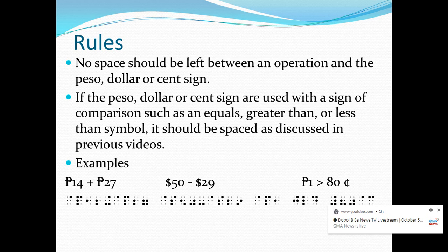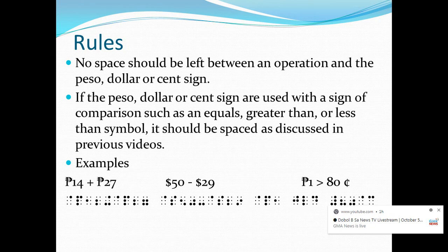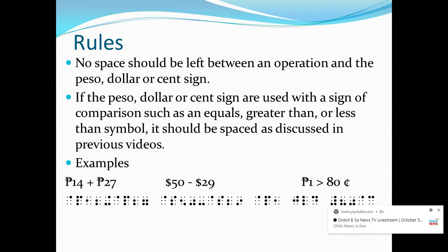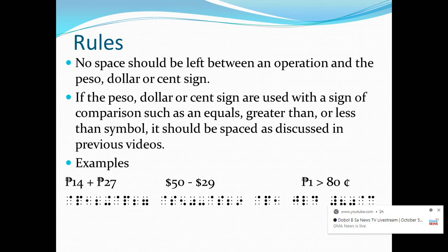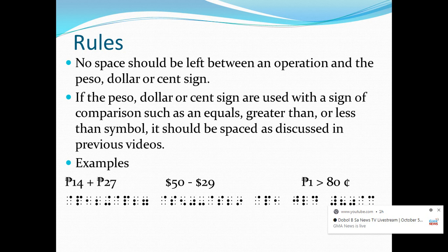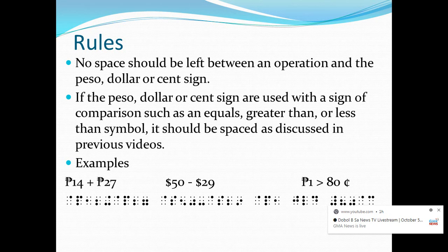Let's take some examples. First, we have ₱14 plus ₱27. So in Nemeth Braille code, we write dot 4 and letter P, then numbers 1 and 4 for 14. Then we write the plus sign without a space, and then we write the peso sign again — dot 4 and letter P — and numbers 2 and 7 for 27, without a space. Since the peso is interacting with a sign of operation — the plus sign — there should be no space between the plus and the peso sign.